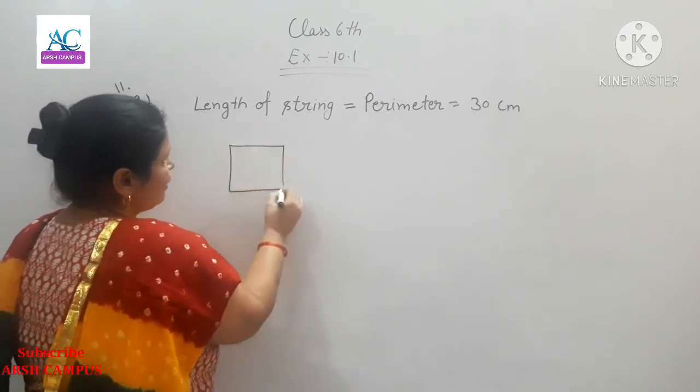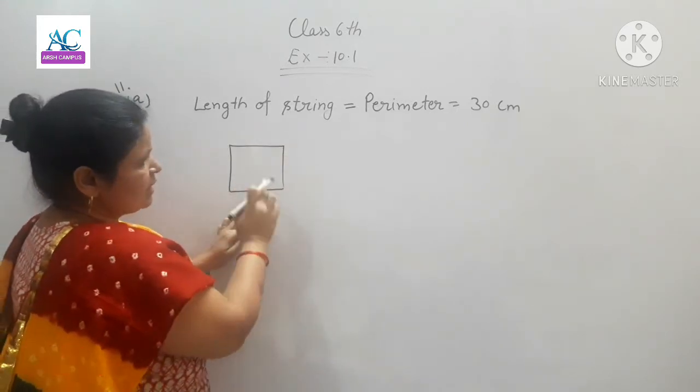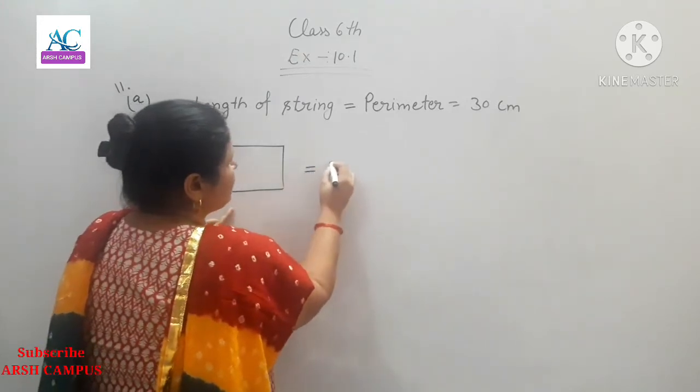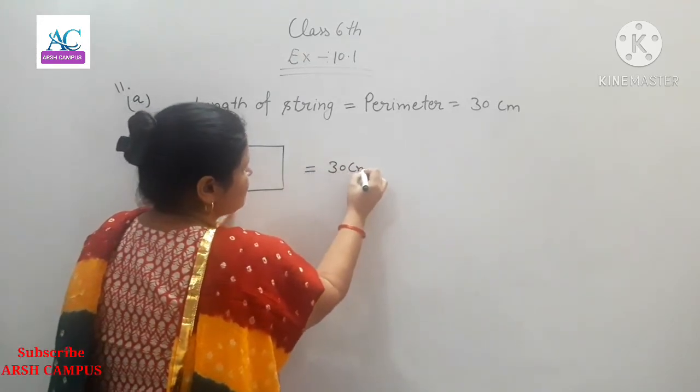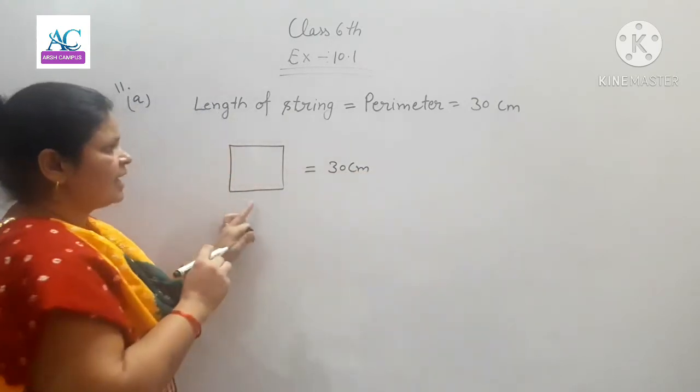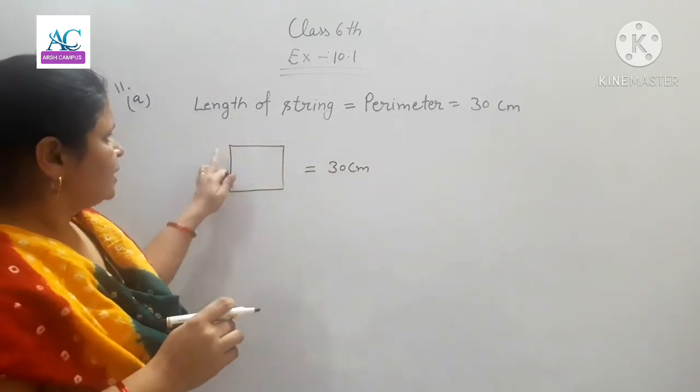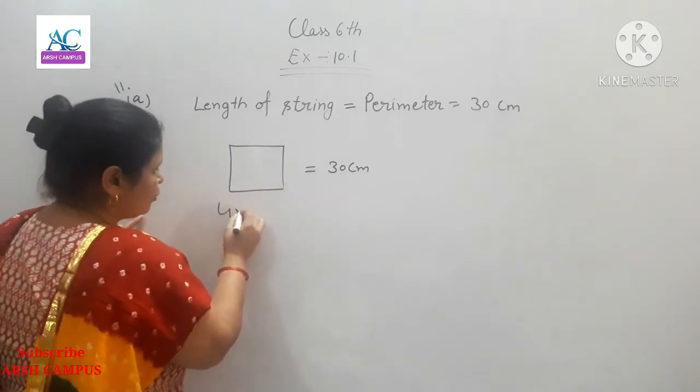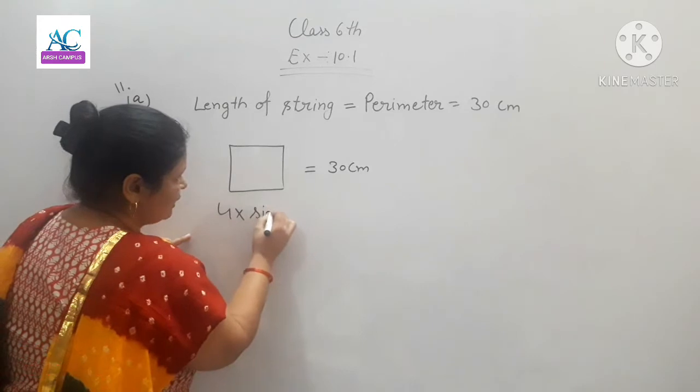a square is formed. All sides are equal. A square has four sides and the perimeter is 30 cm. The perimeter equals four times the side. So 4 × side = 30 cm. Therefore, side = 30 ÷ 4.